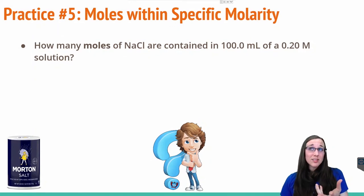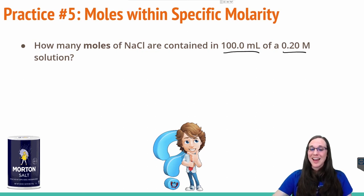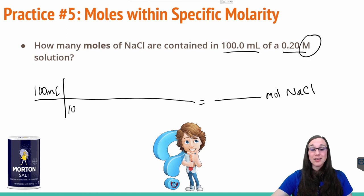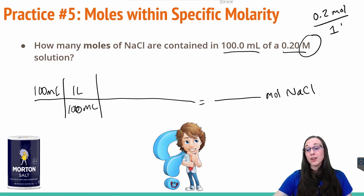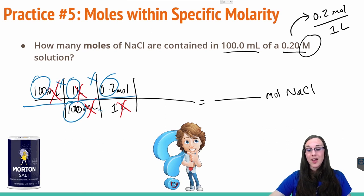What if we need to calculate how many moles of something are in a specific molarity of a solution? Let's say we want to know how many moles of salt are contained in 100 milliliters of a 0.2 molar — or 0.2 moles per one liter — solution of salt water. We set up our line with our goal being moles of NaCl and putting 100 milliliters first. We convert milliliters to liters using 1000 milliliters per one liter, then apply our 0.2 moles per one liter conversion factor. Milliliters and liters cancel, leaving moles: 100 × 0.2 ÷ 1000 = 0.02 moles of NaCl.